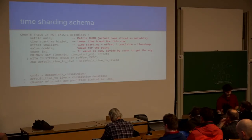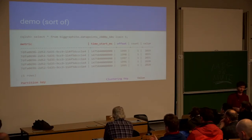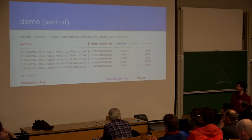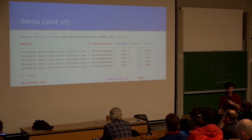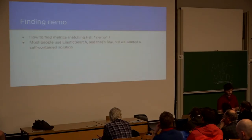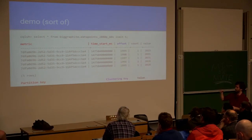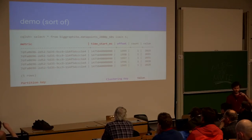In the end the schema looks like this: you have a metric ID — not the full name, to avoid repeating the metric name throughout the database — the start of the block, the offset within the block, and all the values. That works pretty well. On the write path, you just append a new row. On the read path, you select the metric, the block you want, and the range of offsets within that block, and that gives you the points you need.